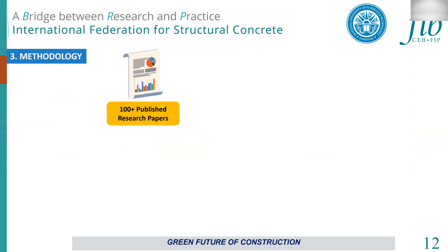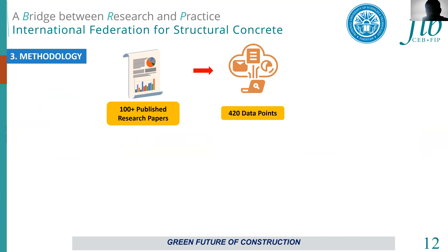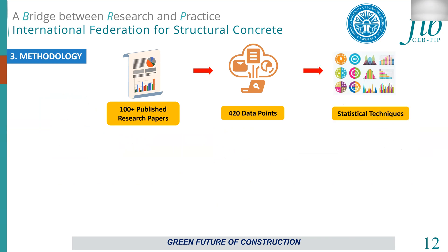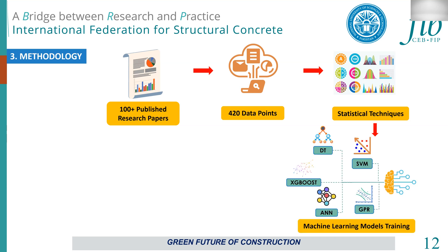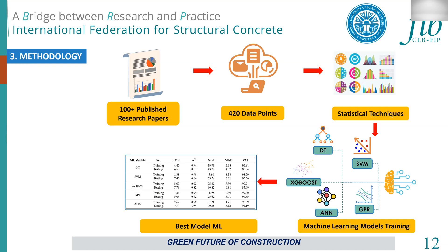Initially, 100+ research publications were collected, from which 420 data points were extracted. Different statistical techniques were applied to normalize the dataset and make it suitable for machine learning. Five machine learning models were trained: decision tree, XGBoost, artificial neural network, and Gaussian process regression. Their performance was assessed using statistical indicators including R-squared, root mean square error, and mean square error.